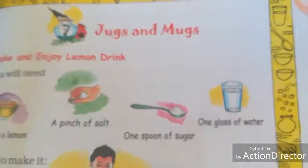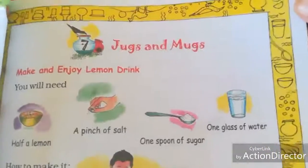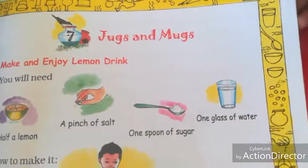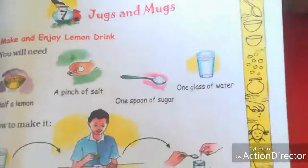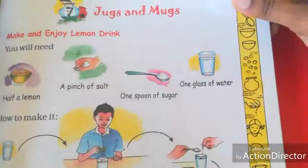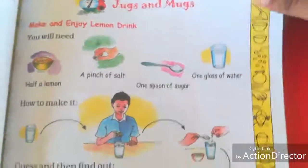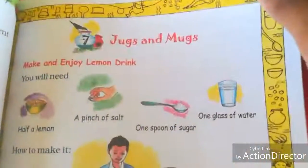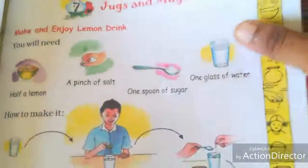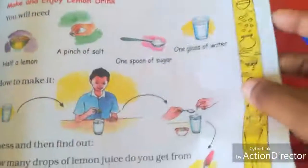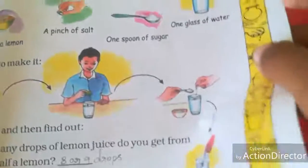Hi students, this is a math video for Grade 2. We are going to see the same lesson — Jugs and Mugs — and cover the remaining part. Now open your book to page number 53.